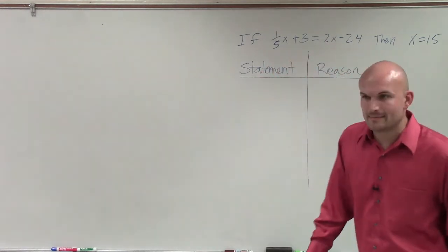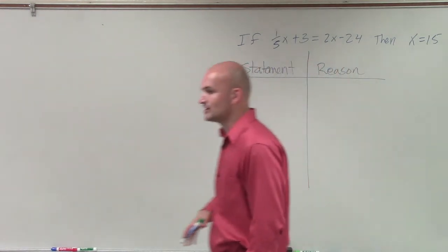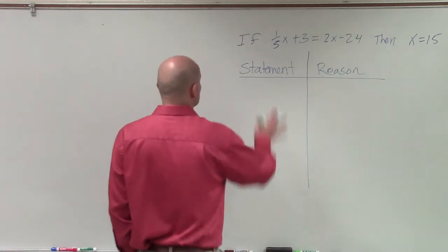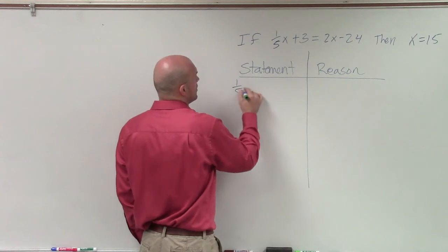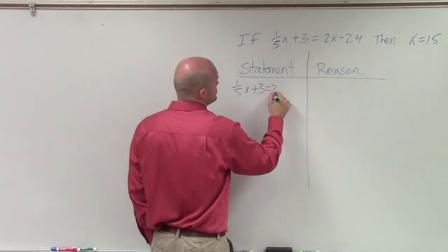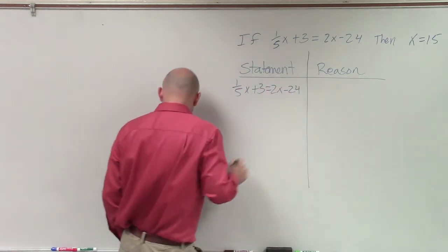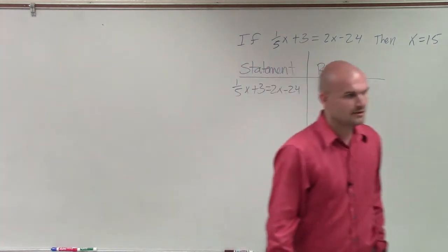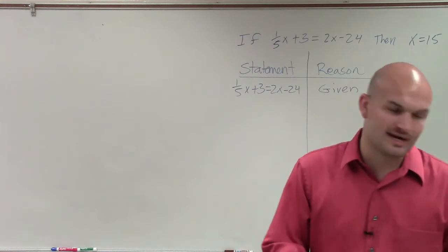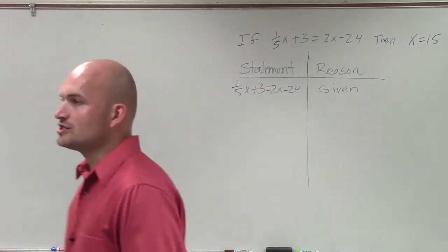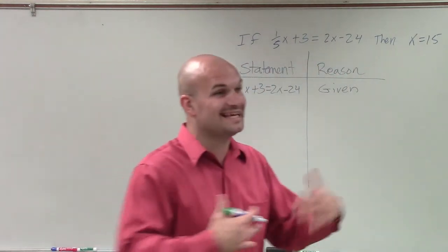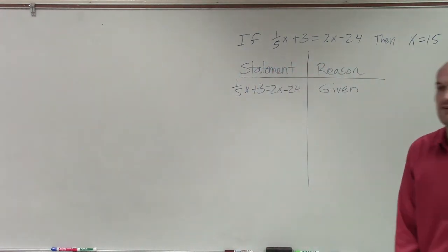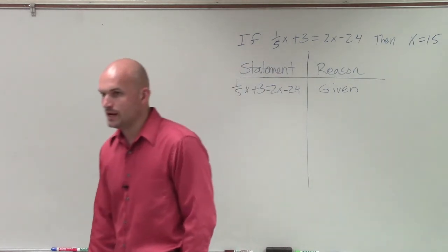So the first statement is always nice to go and take a look at, because our first statements are going to be what is provided to us. So what's been provided to us is 1/5x plus 3 equals 2x minus 24. And the reason we got that is because it was provided to us. So we call it given. So whenever you're given something that I'm asking you to prove, you're always going to want to take all the information that they give to you and write it down to say, this information has been given.